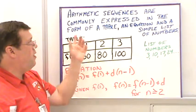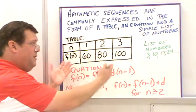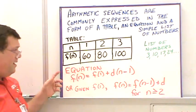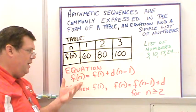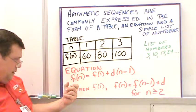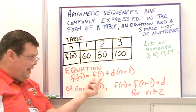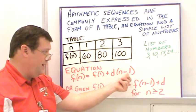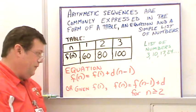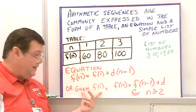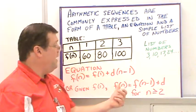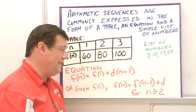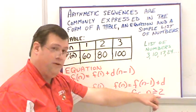Arithmetic sequences are commonly expressed in the form of a table, an equation, or a simple list of numbers. A list of numbers would look something like: 3, 10, 17, 24. For equations, the generic form for the explicit rule is f(n) = f(1) + d times (n - 1), where d is the common difference and n is the term number. The recursive form requires the given function value at 1, and the generic term is f(n) = f(n-1) + d, for all terms n greater than or equal to 2.